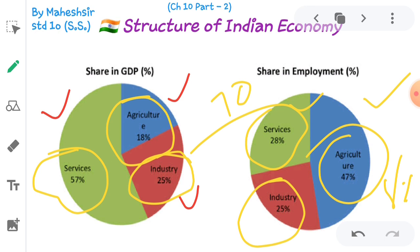The primary sector's contribution to employment generation and national income is high. However, as there is a rise in economic development, the significance of the primary sector decreases in comparison to secondary and service sectors, and the importance of the industrial sector and service sector increases. This is the Indian economic structure.